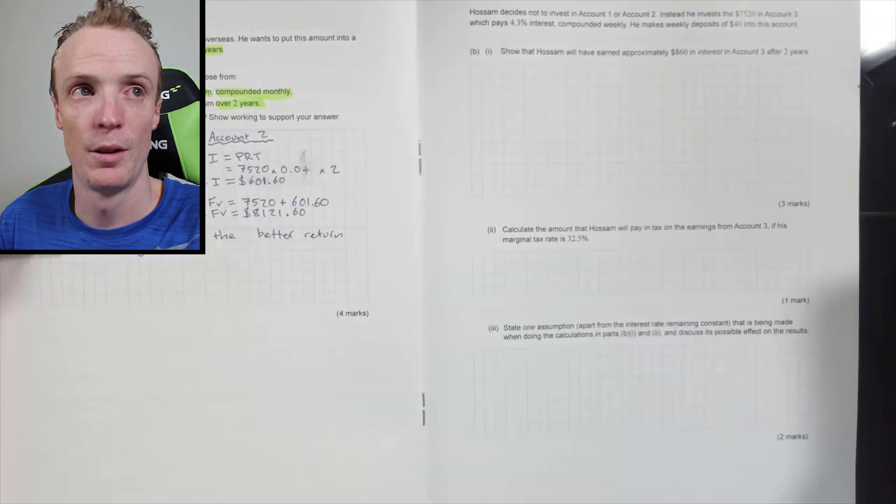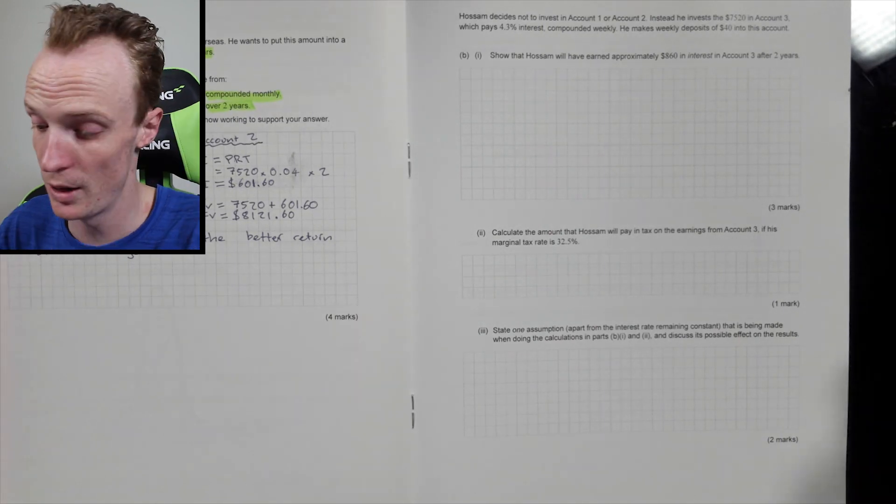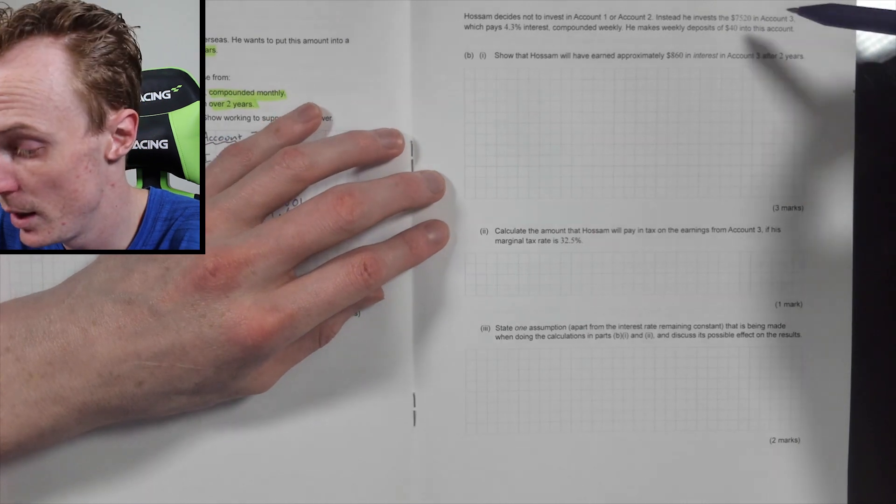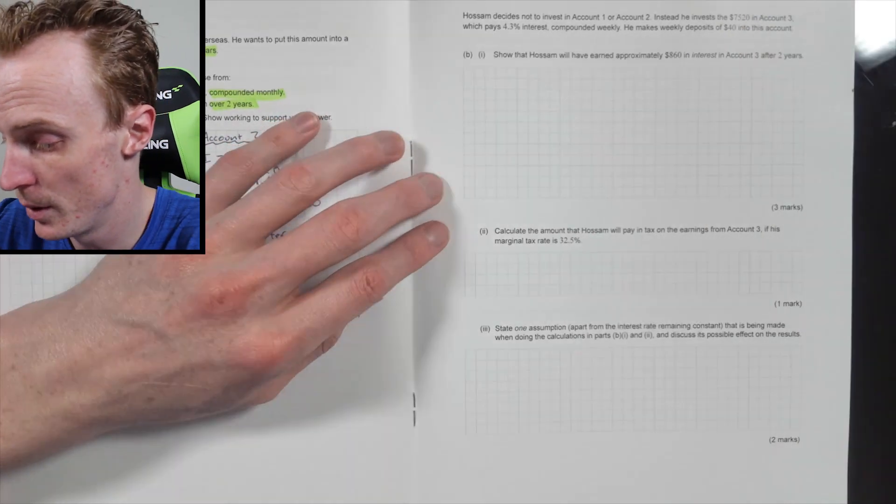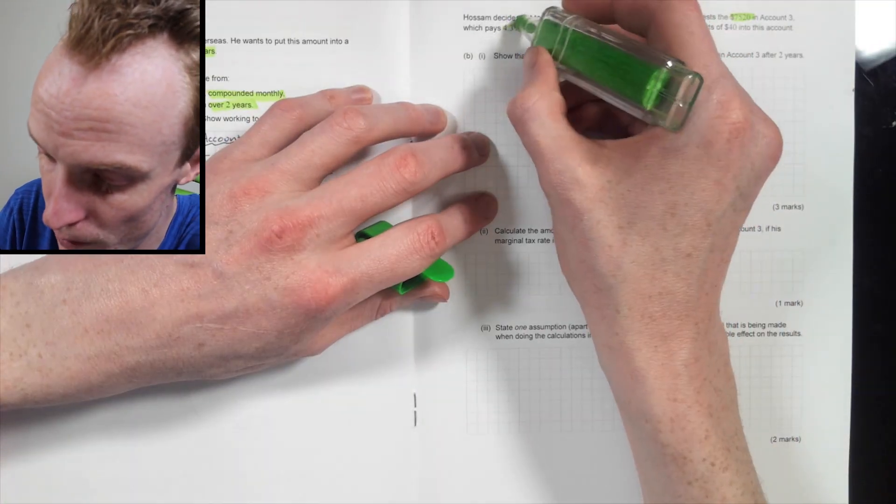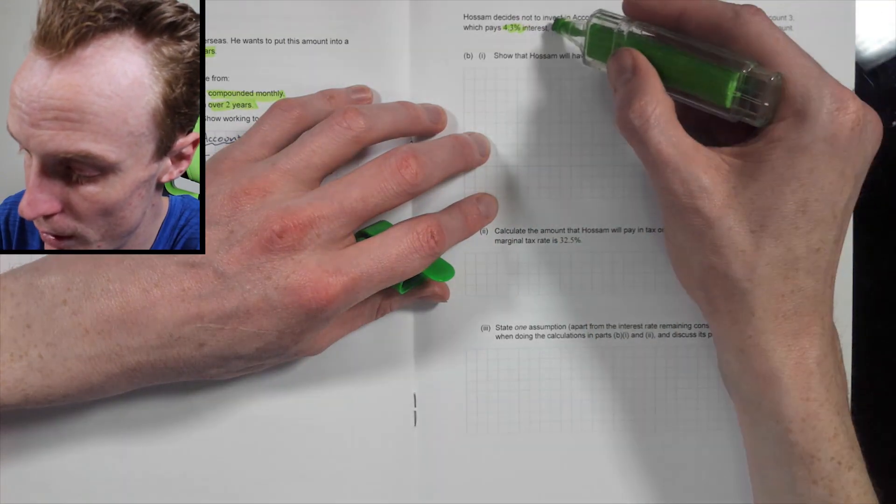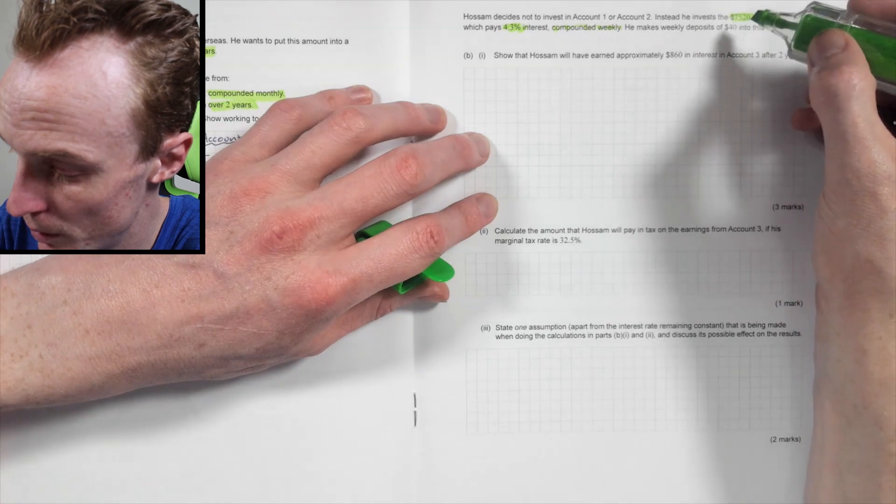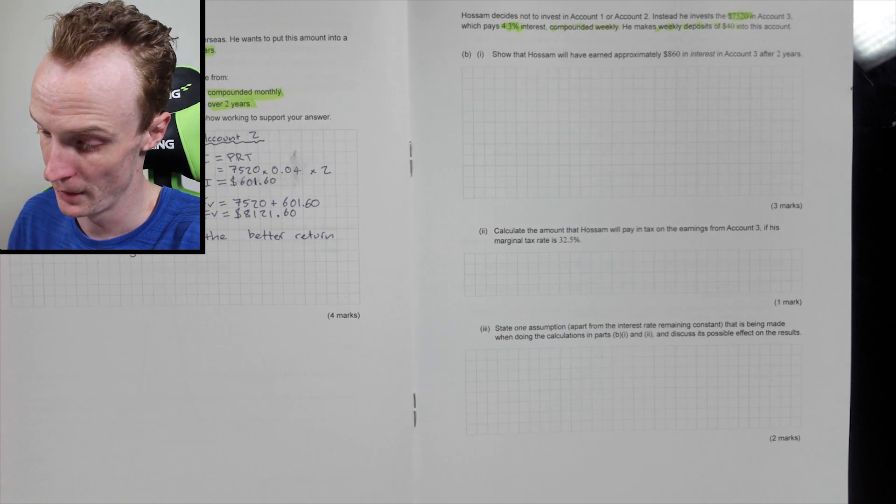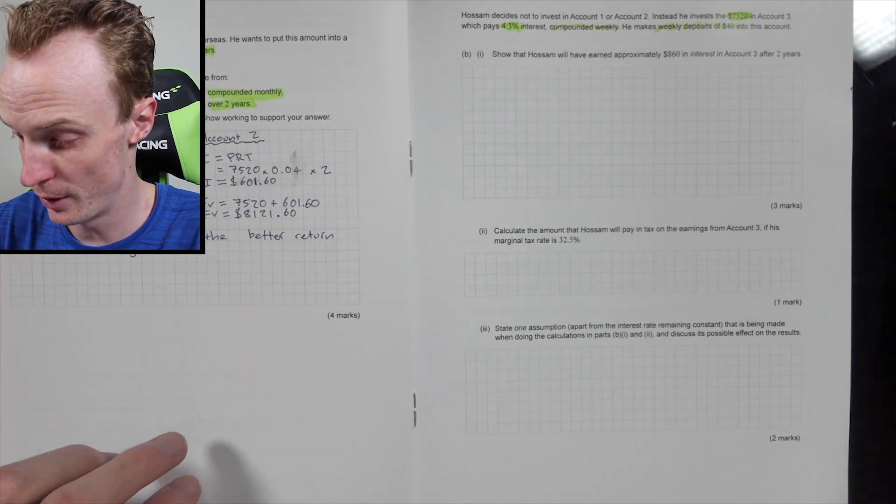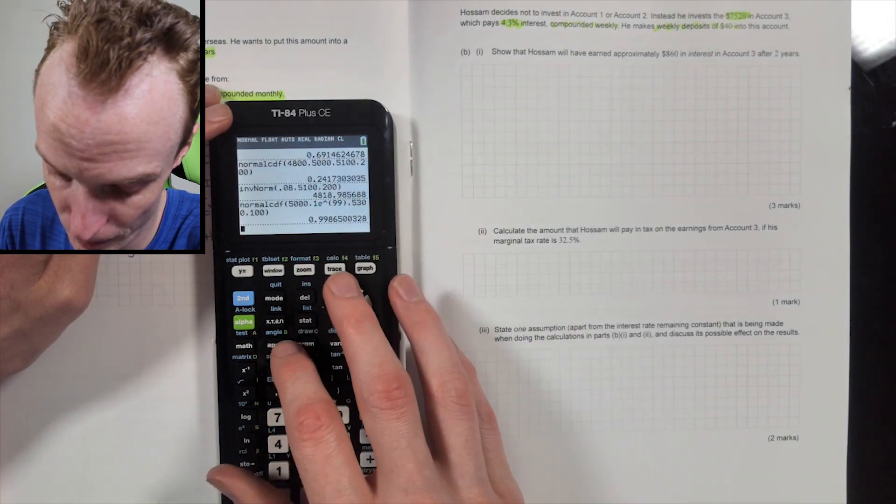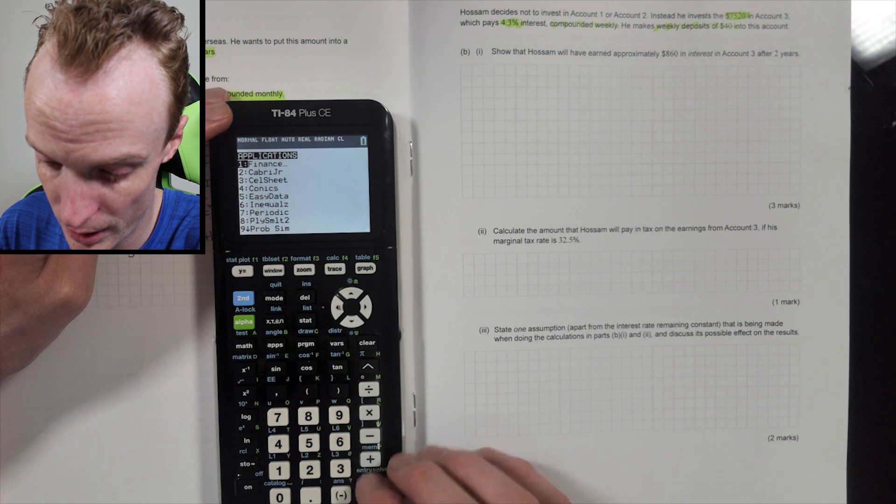All right. So Hossam has decided not to invest in account one or account two. Instead he invests the 7,520 into account three, which pays this amount, which pays 4.3% interest compounded weekly. He makes deposits of $40. So weekly deposits of $40 into the account. Show that Hossam will have earned approximately $860 in interest in account three after two years. This is where I would be bringing back up the TMV solver.